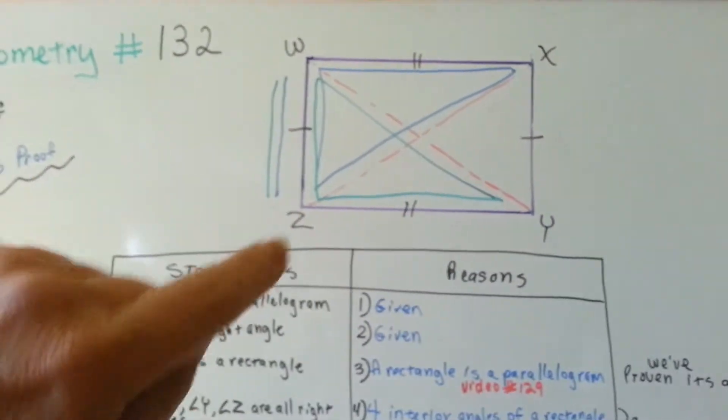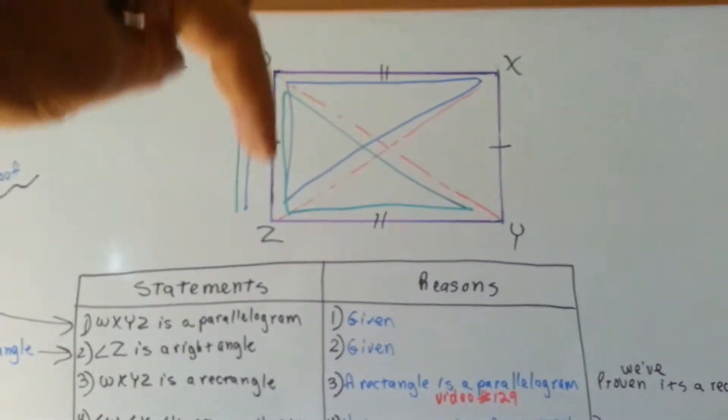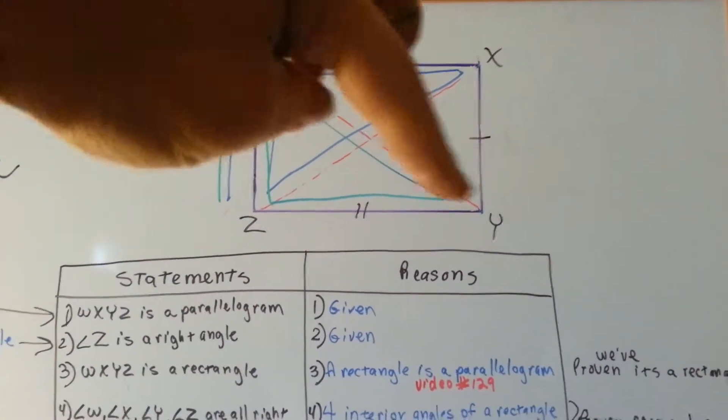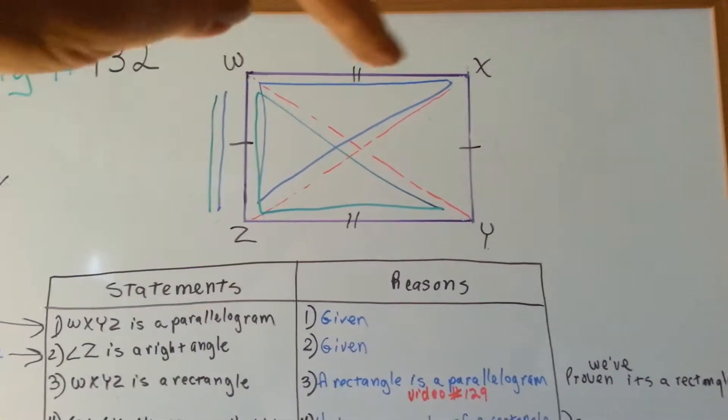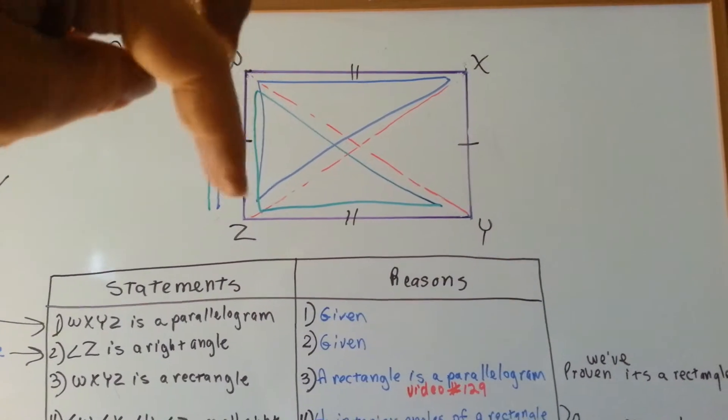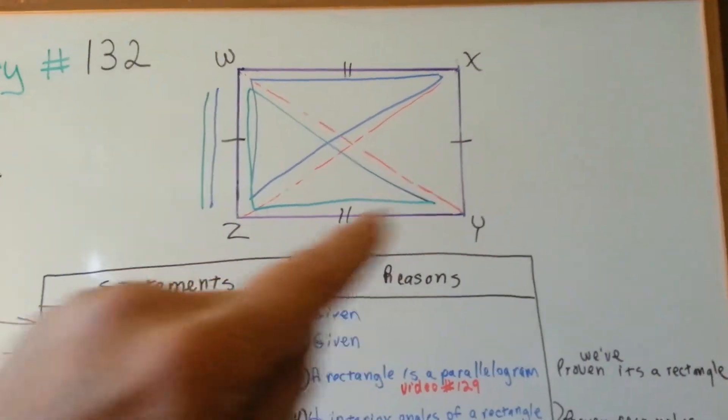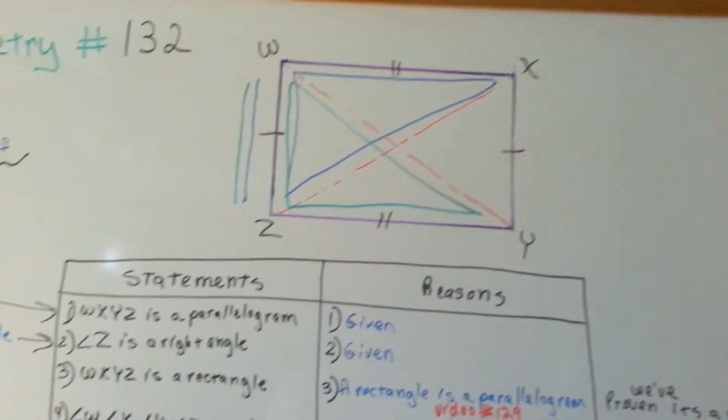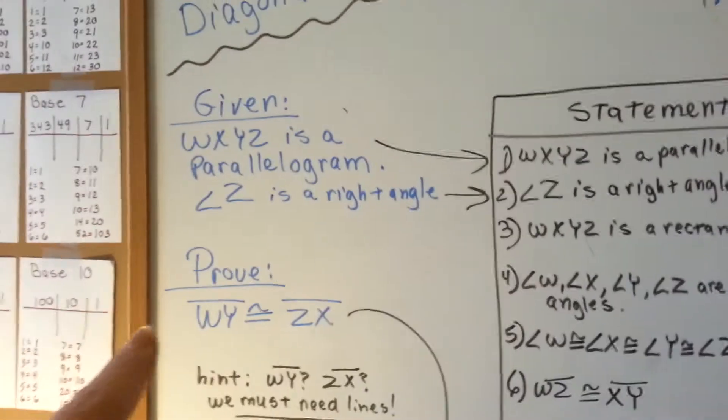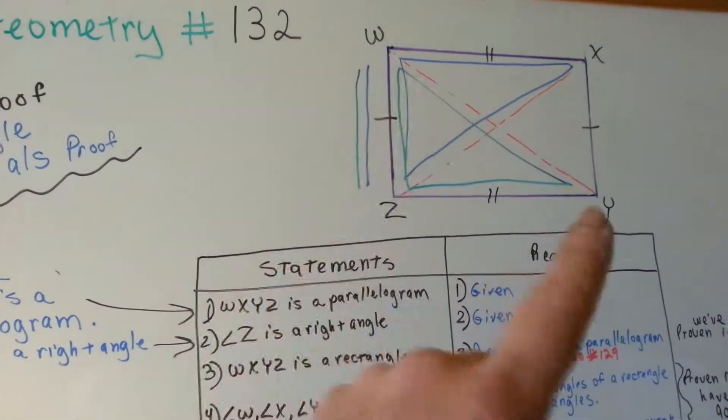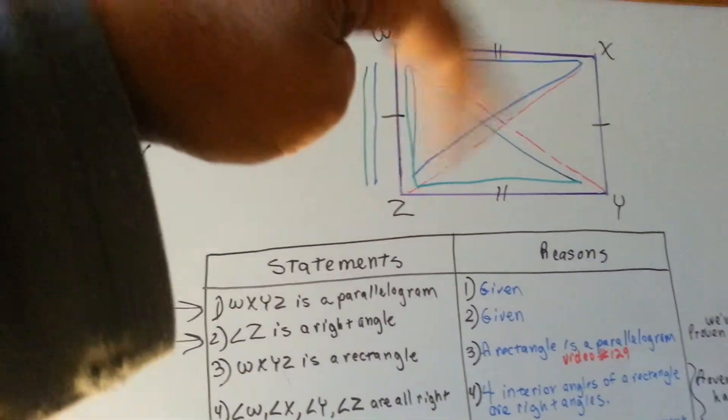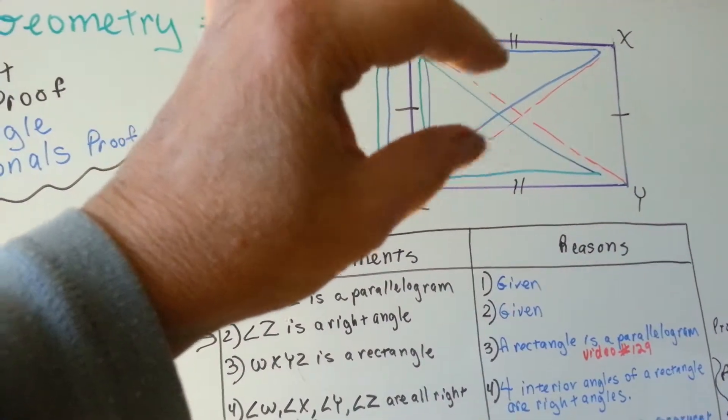So, what we're going to do is, we're going to show that this blue triangle, we've bisected it with the red lines to help us solve the proof, but we're going to show that this blue triangle is congruent to this green triangle, and that's how we're going to prove that WY is congruent to ZX by proving that these two triangles.